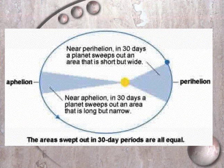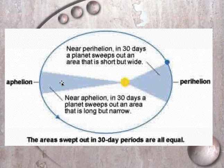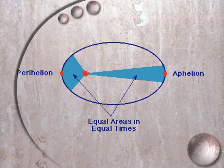Here's a picture for that area of your notes. If we put a piece of string on the sun and a piece of string on the planet and gave it 30 days, it would draw a triangle. If we did the same thing on the other side of the orbit, you'd get a short fat triangle on one side and a long skinny triangle on the other. It would take the same amount of paint to cover either triangle — that's why it's called equal areas.